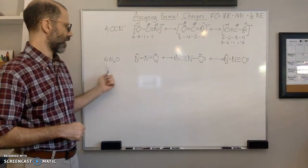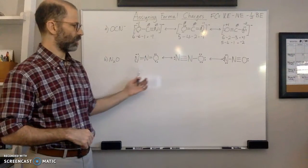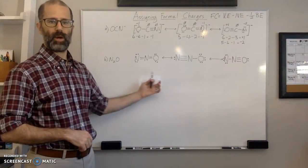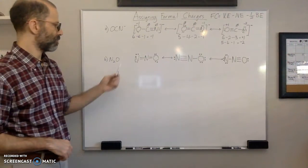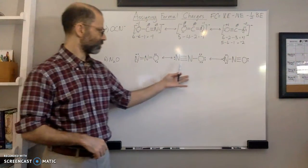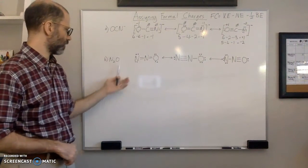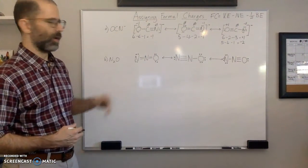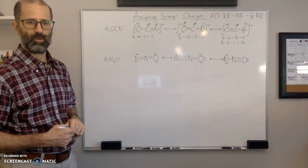Di-nitrogen oxide has no charge, so you'll notice that I do not have square brackets around the Lewis structures. These resonance structures are three different resonance structures for this substance. So the first thing we want to do is assign formal charge.